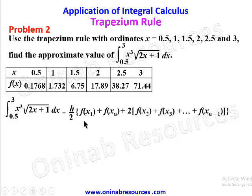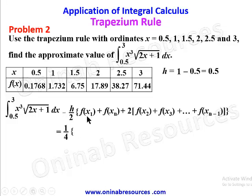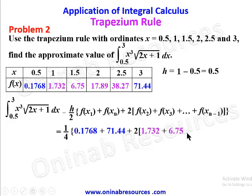We find h: h = x₂ − x₁ = 1 − 0.5 = 0.5, so h/2 = 0.5/2 = 1/4. Substituting: (1/4) times [(f(x₁) + f(xₙ)) + 2×(middle values)] = (1/4) times [(0.1768 + 71.44) + 2×(1.732 + 6.75 + 17.89 + 38.27)].